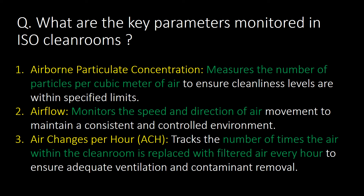What are the key parameters monitored in ISO cleanrooms? The first parameter is airborne particulate concentration — we measure the number of particles per cubic meter of air. The second parameter is airflow — we monitor the speed and direction of air. The third important parameter is air changes per hour (ACH) — we track the number of times the air within the cleanroom is replaced with filtered air every hour.